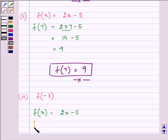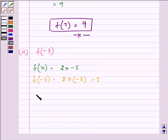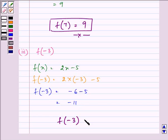We will be replacing x by -3 and on doing so we have 2 × (-3) - 5 which gives us -6 - 5, that is -11. So the value of f(-3) is equal to -11.